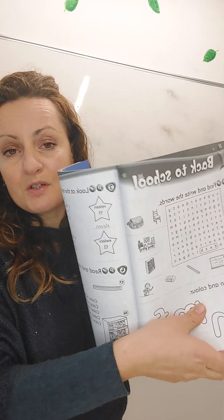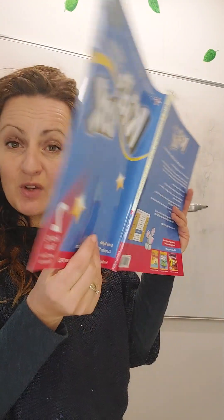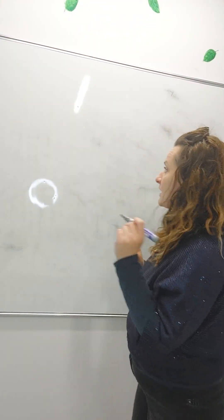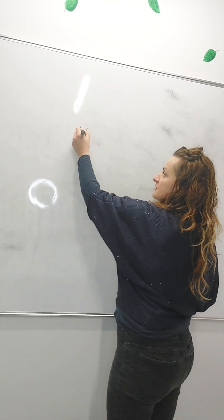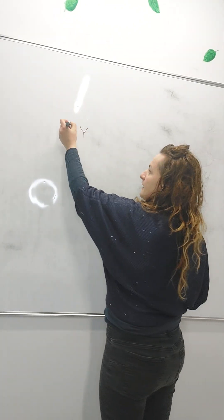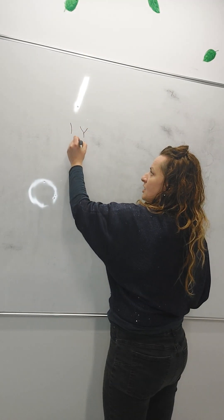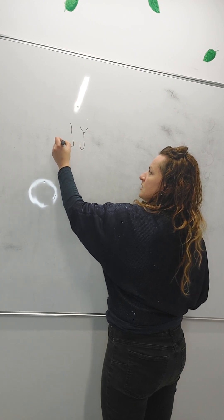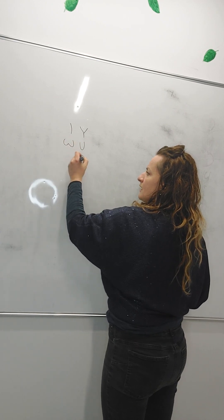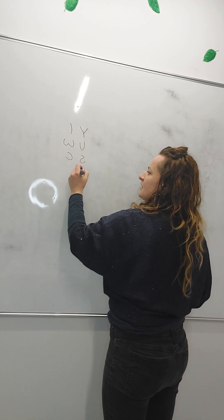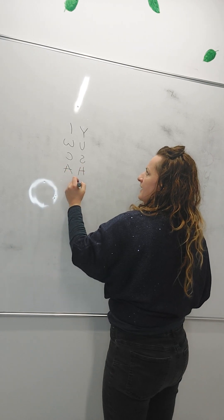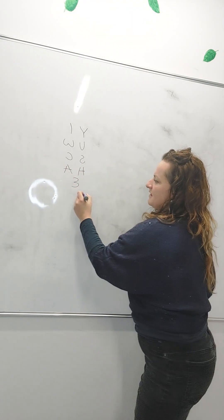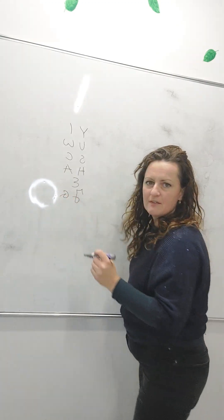So open your activity books at page 10. All right. So let me just quickly recap our alphabet — write the difficult letters. This is Y-I-U-W-S-C-H-A-E-J-G.